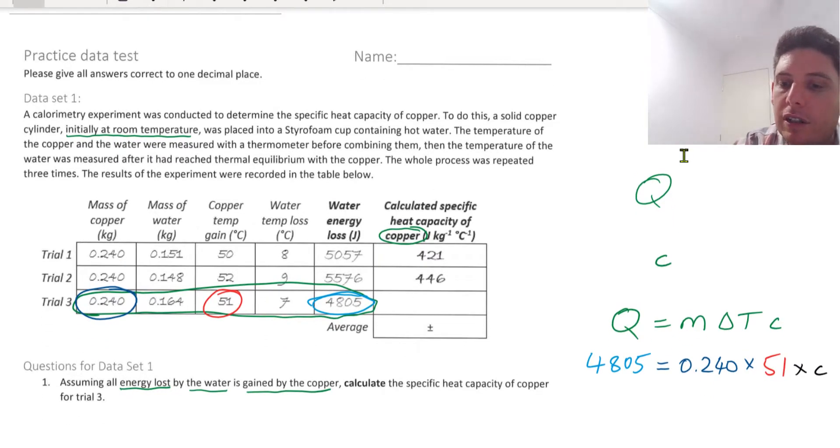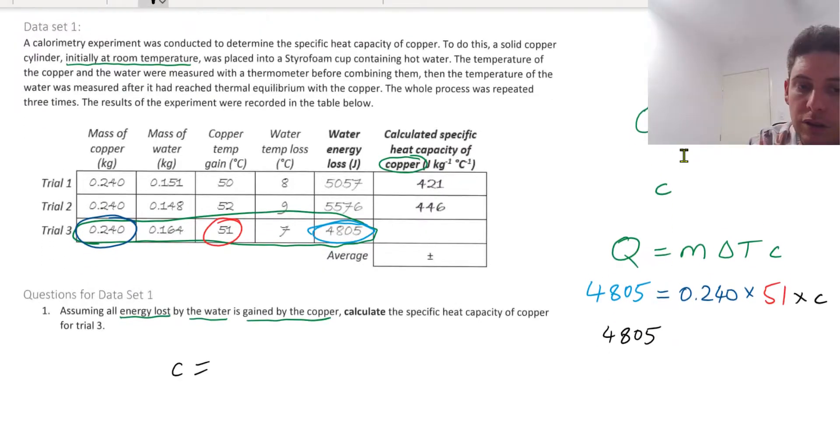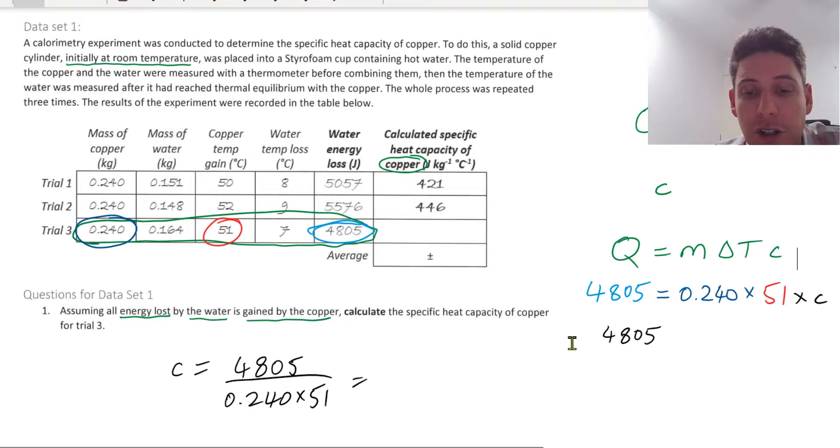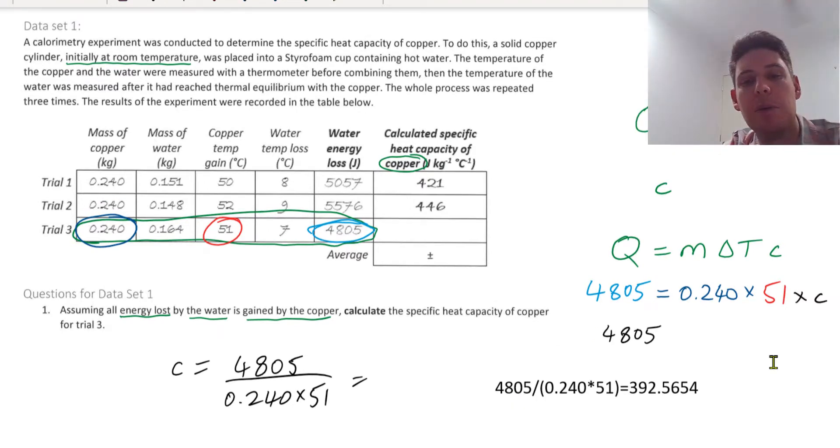So we rearrange this algebraically to figure out what C is equal to. So divide 4805 by these two numbers. And hopefully you have a calculator handy.